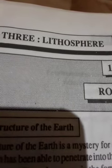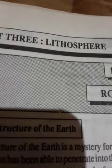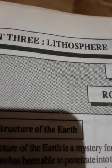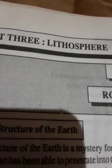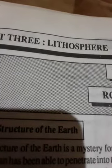Sima, the lower continuous layer, has an average density and composition similar to that of common black volcanic lava called basalt. This basaltic layer directly lies under the ocean floor and here forms the thinnest part of the earth's crust.